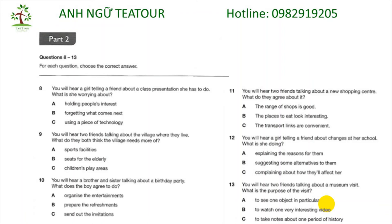Question 13: You will hear two friends talking about a museum visit. What is the purpose of the visit? We're going to the museum tomorrow. I can't remember why, though. The teacher did explain. We're meant to write down interesting facts about the age of exploration. There's a special exhibition on. I thought we were supposed to watch a video while we're there. There is a good video, but that's not why we're going. He said that's something we could do if we liked. And there's a fantastic gold ring from South America on display, too. But that's even older. We don't have to see that, but we might as well if we're there.